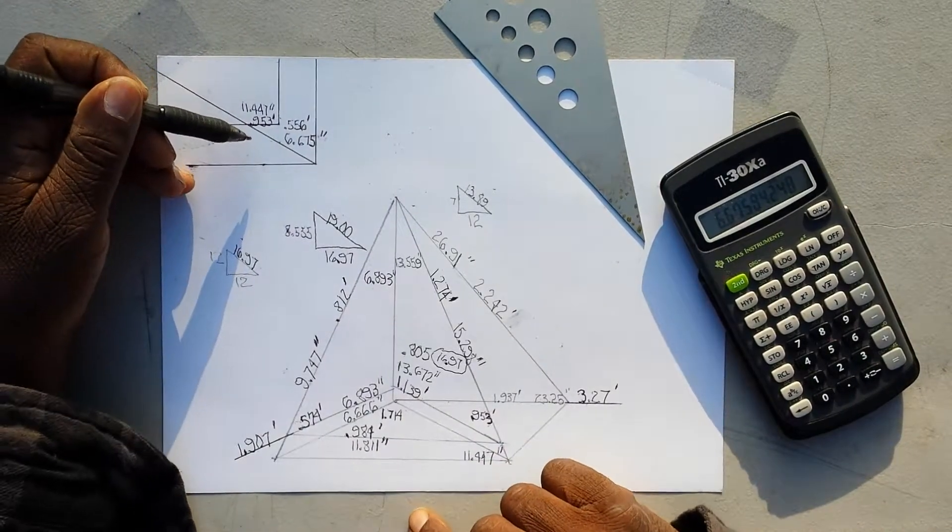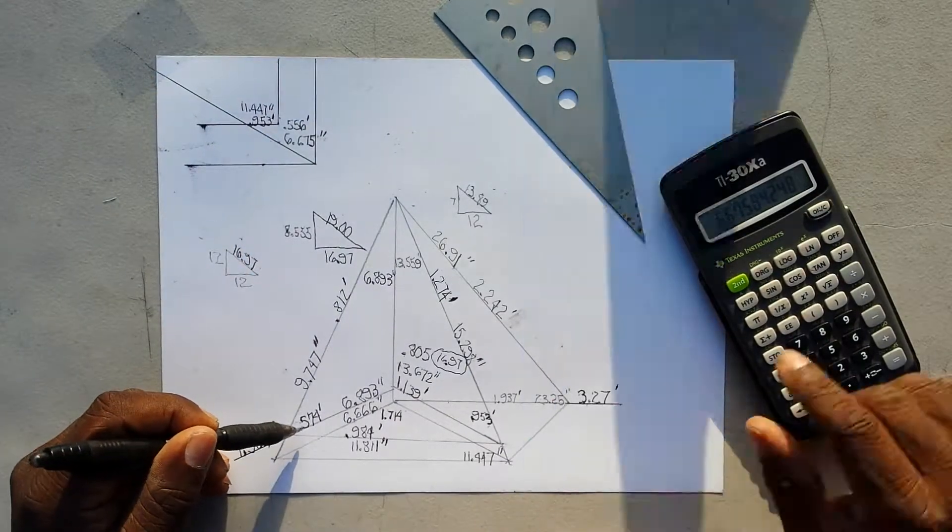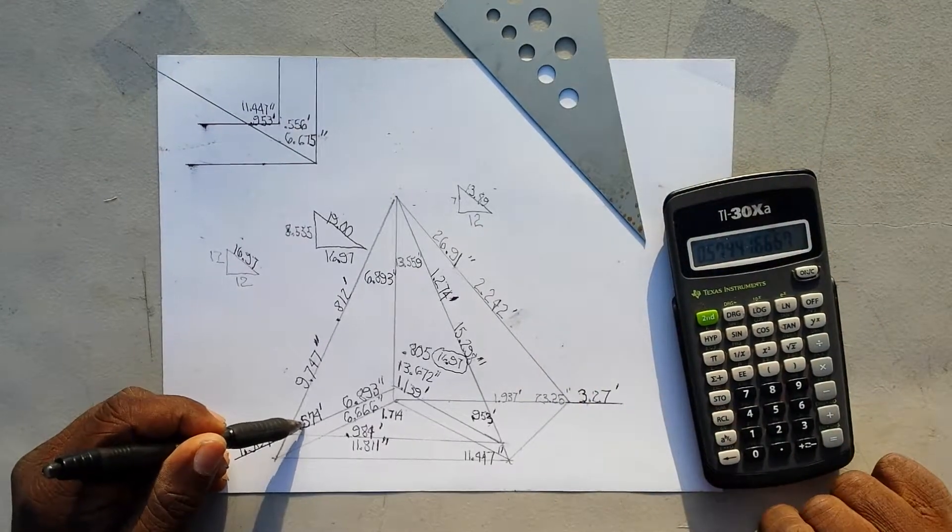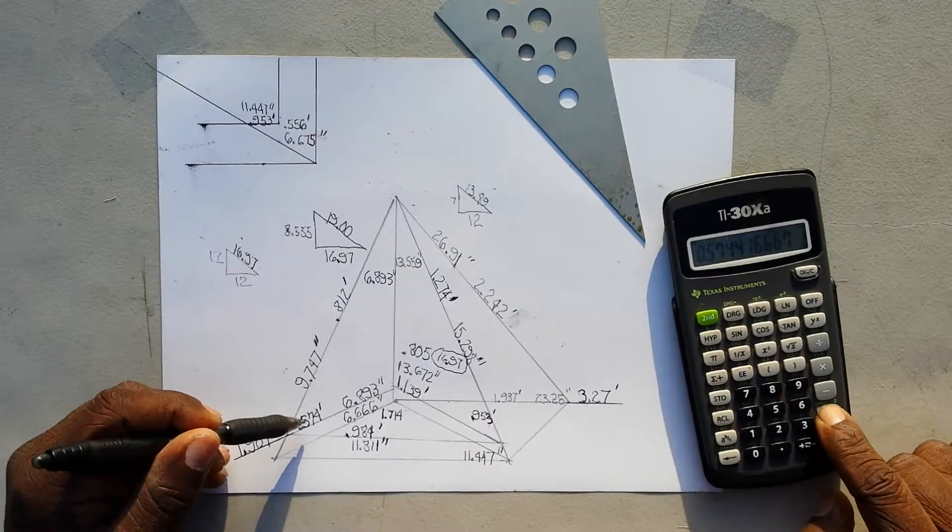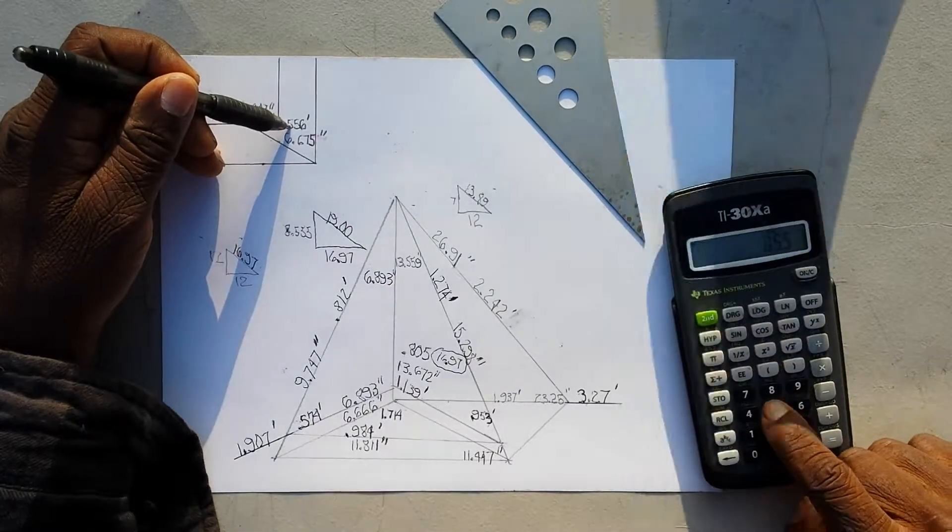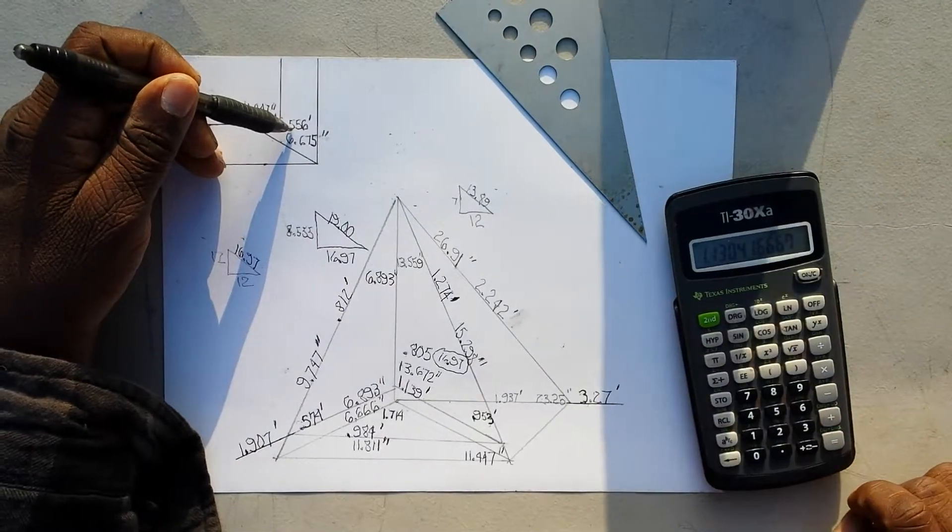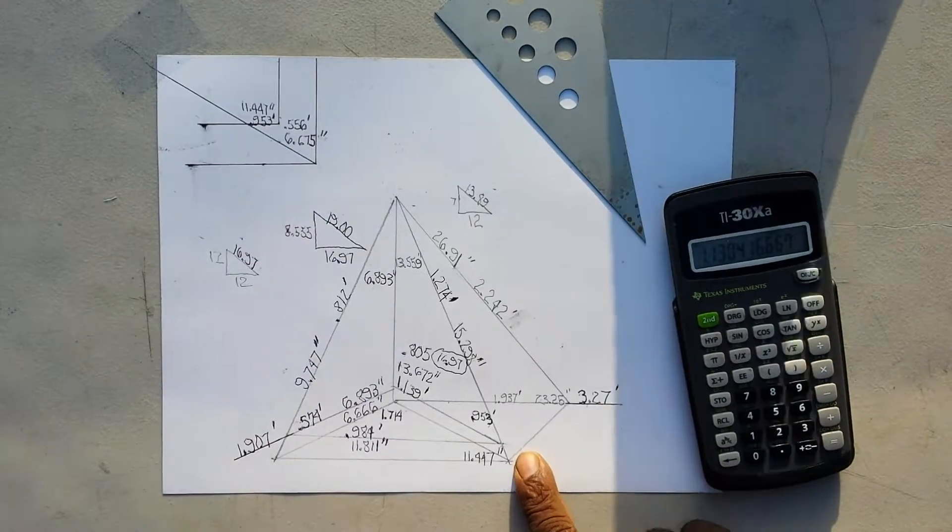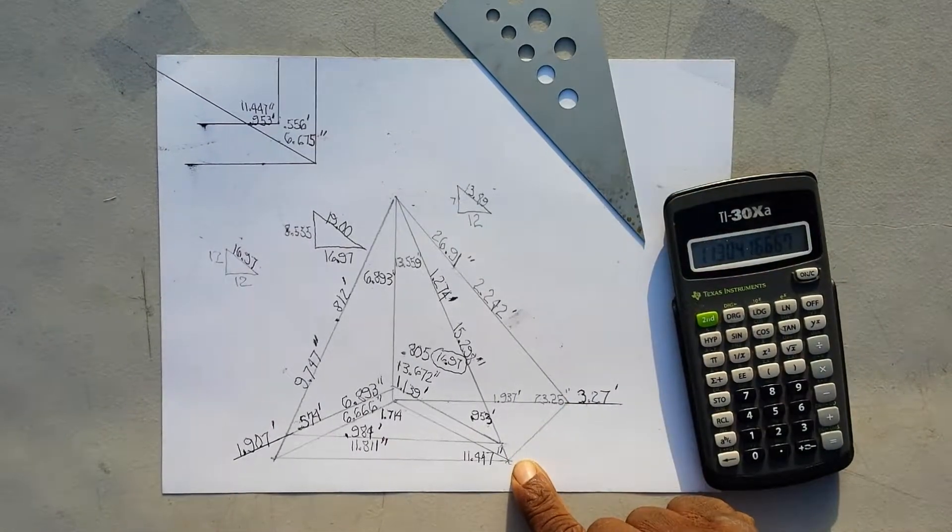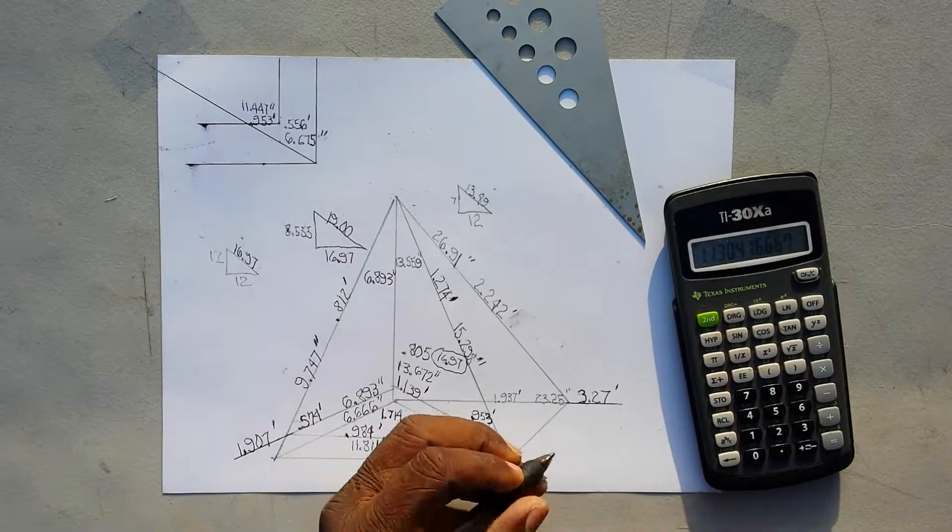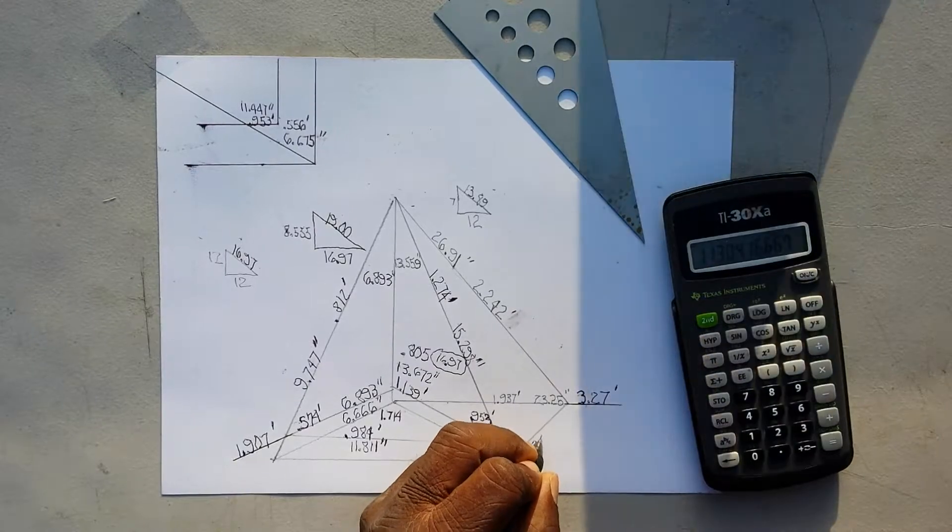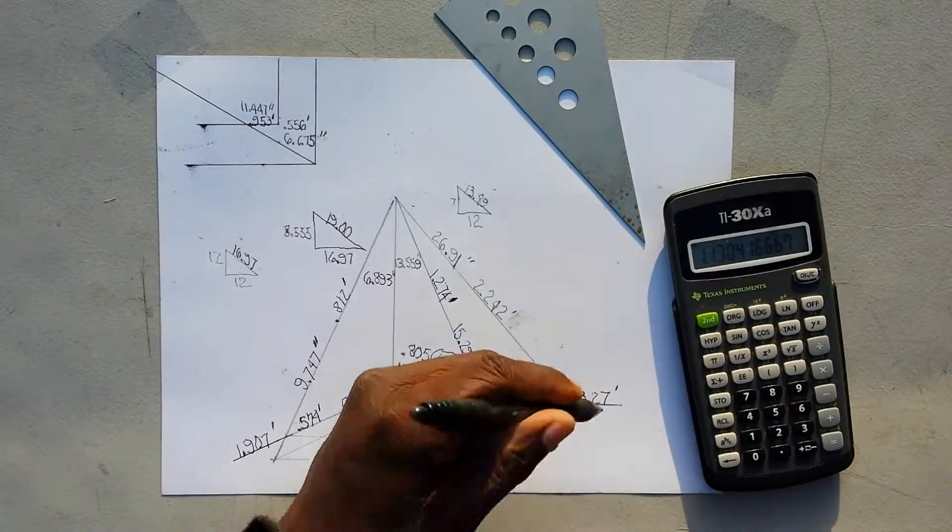So what you do is take 0.574 feet and we add that - we're going to press recall. We already know that's in the calculator. We add this 0.556 equals 1.130 feet. That's the length for this one. So now we got our whole run.